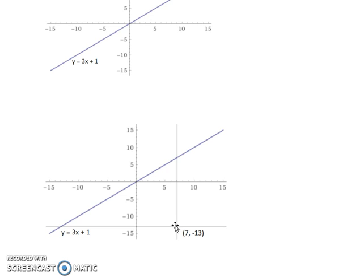So here's the point—excuse me—(7, -13). Here's that point. We want to find the line that passes through this point and is perpendicular to y = 3x + 1. We want to find what is the slope and y-intercept of this line.